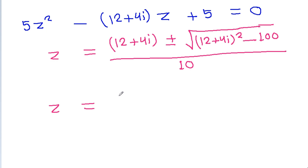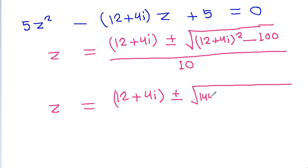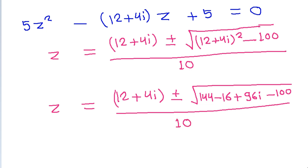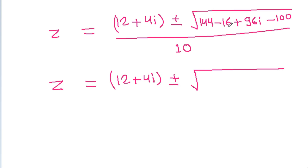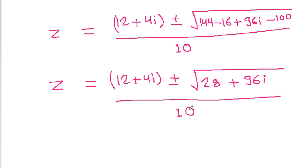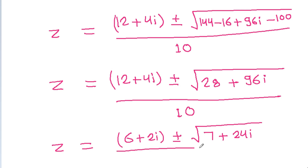So g equals (12 plus 4·iota) plus or minus the square root of: (12 plus 4·iota)² equals 144 plus 4·iota² which is minus 16, plus 2 times 12 times 4·iota which is 96·iota, minus 100, all divided by 10. That gives us the square root of (144 minus 16 minus 100 plus 96·iota), which simplifies to the square root of (28 plus 96·iota) by 10. Dividing by 2 gives g equal to (6 plus 2·iota) plus or minus the square root of (7 plus 24·iota), all divided by 5.